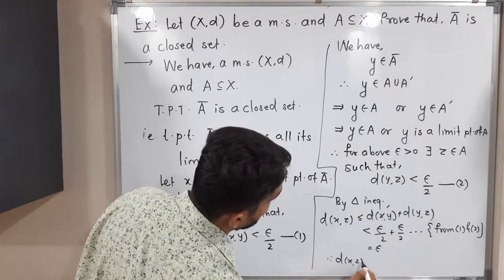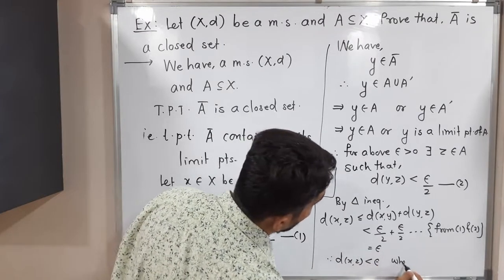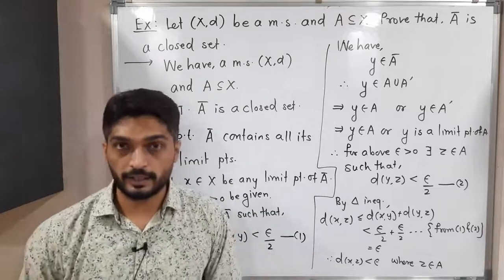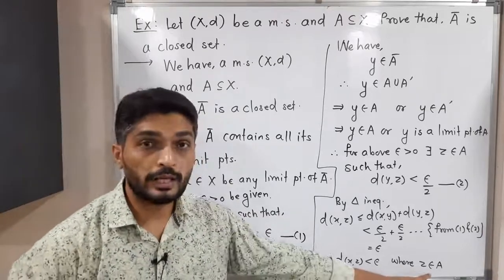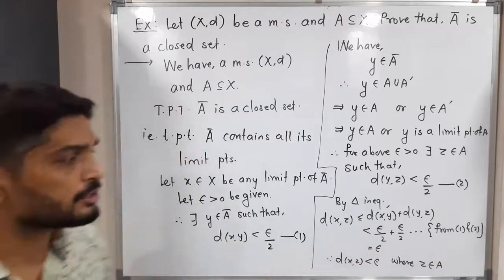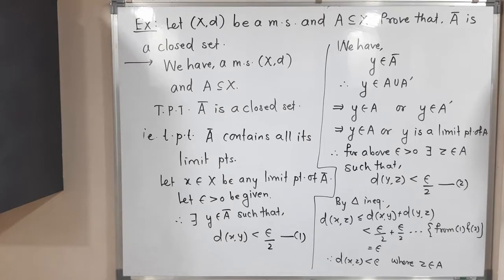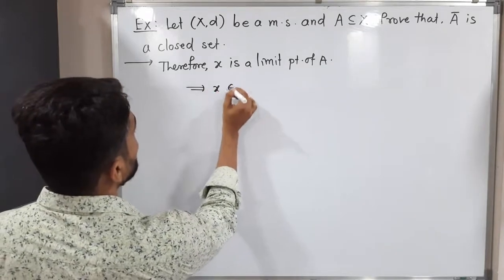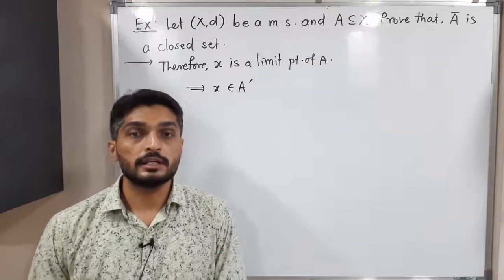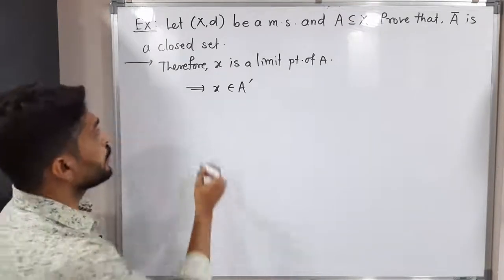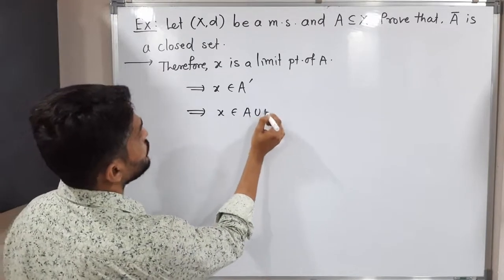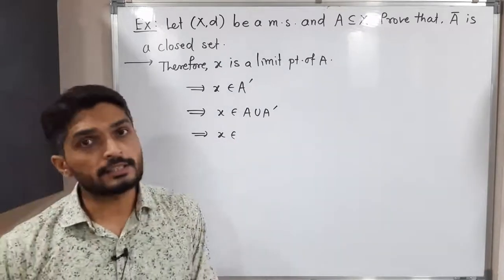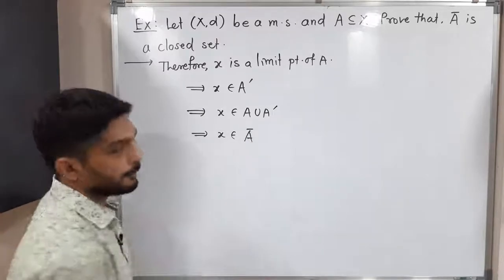By the triangle inequality, with three points x, y, z, we have: d(x, z) ≤ d(x, y) + d(y, z). Now d(x, y) < epsilon/2 from (1), and d(y, z) < epsilon/2 from (2). So epsilon/2 + epsilon/2 = epsilon, therefore d(x, z) < epsilon. Since z belongs to A, the point x is a limit point of A, so x belongs to A' (the derived set of A). Since A' ⊆ A ∪ A' = Ā, we have x belongs to Ā.